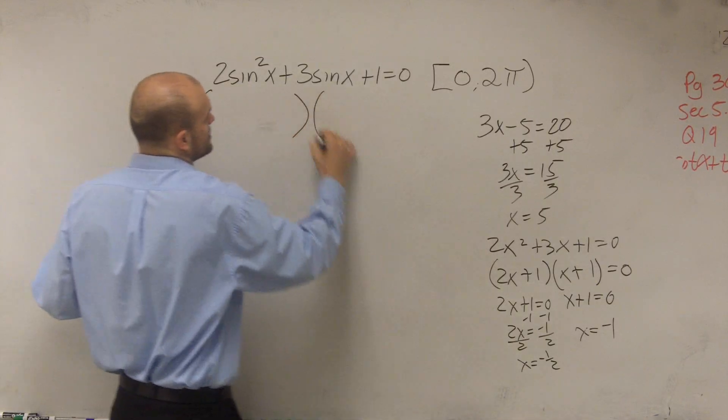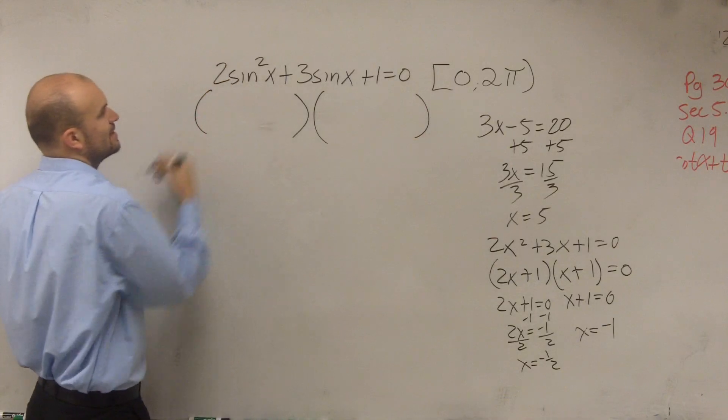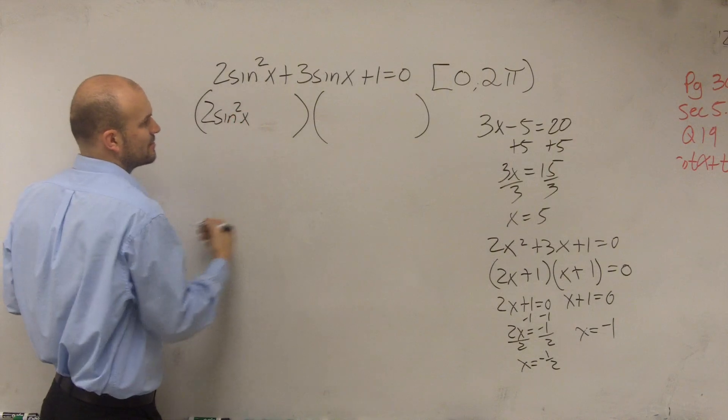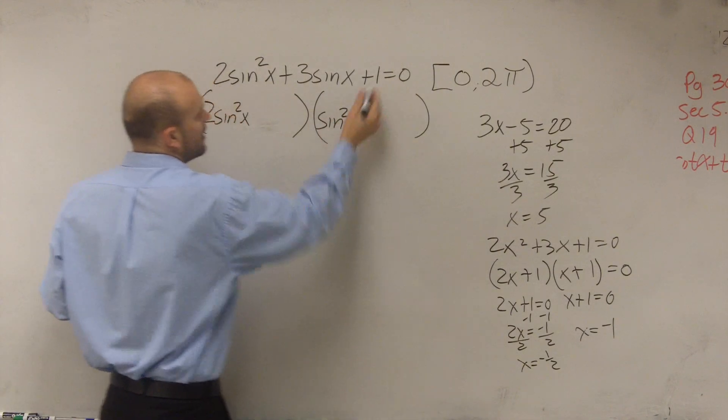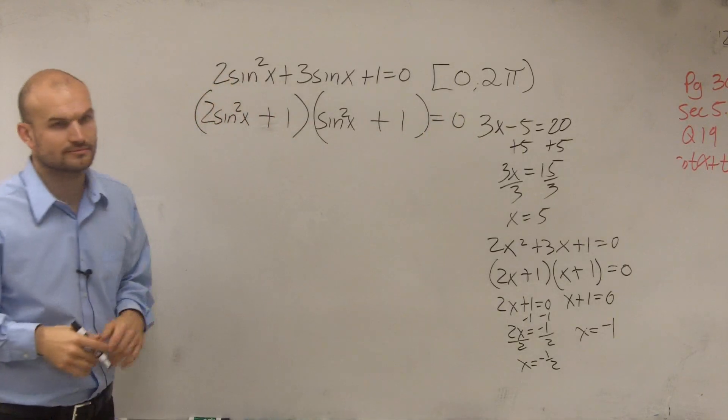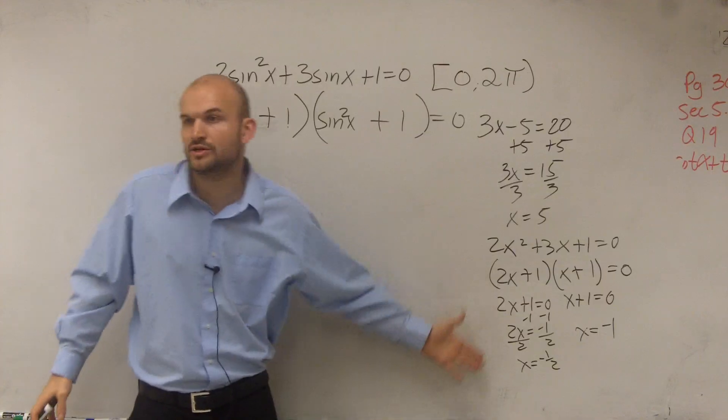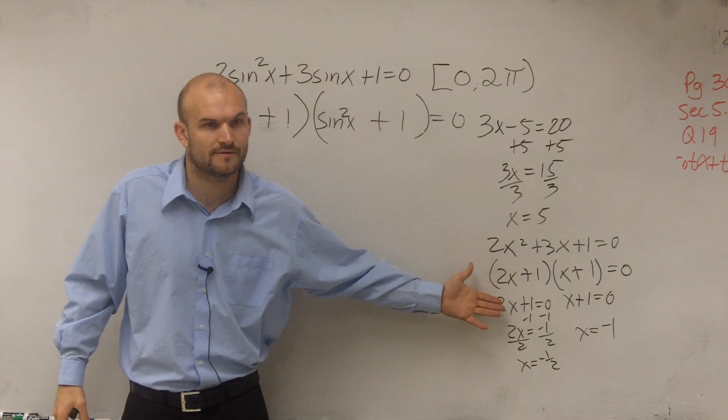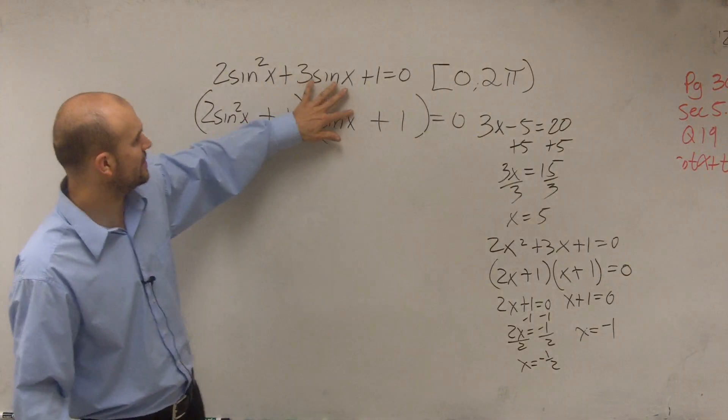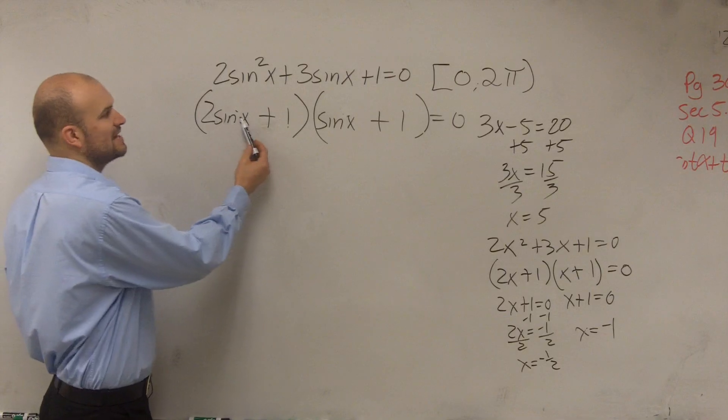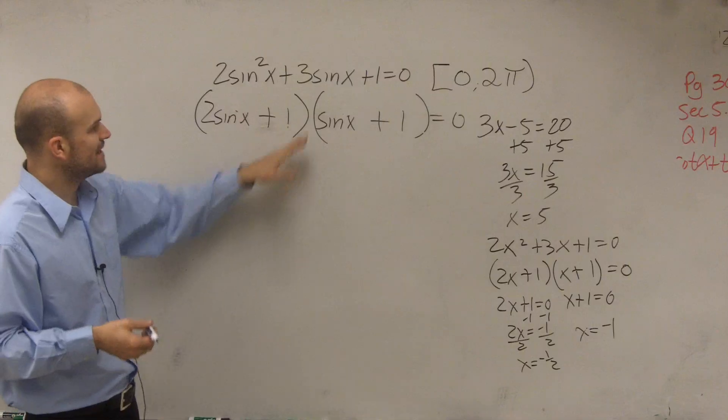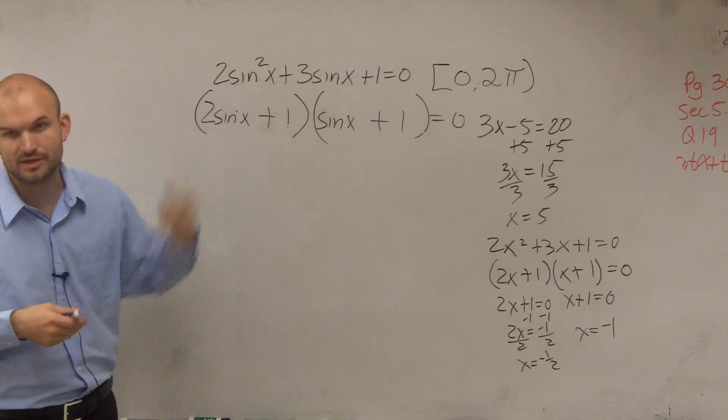So I need to say, what two terms are obviously going to multiply to give me 2 sine squared? So that means one of them needs to be 2 sine of x, and the other sine of x. And then both these two terms need to multiply to give you 1. You just factor it like you would factor any other algebraic expression. 2 sine of x times sine of x equals 2 sine squared of x, right? And then when you combine them up, you get 3 sine of x. 1 times 1 equals 1. We're all good.